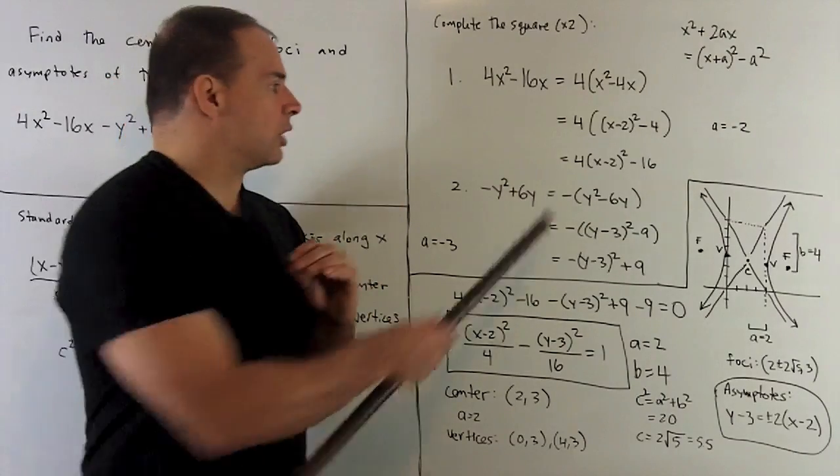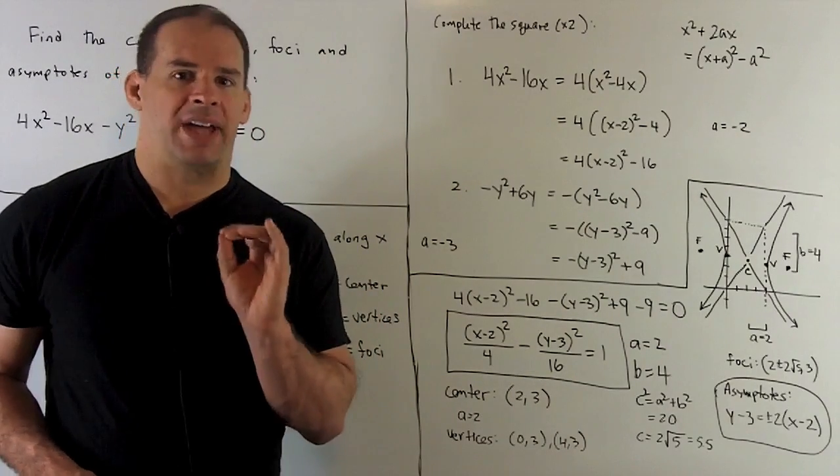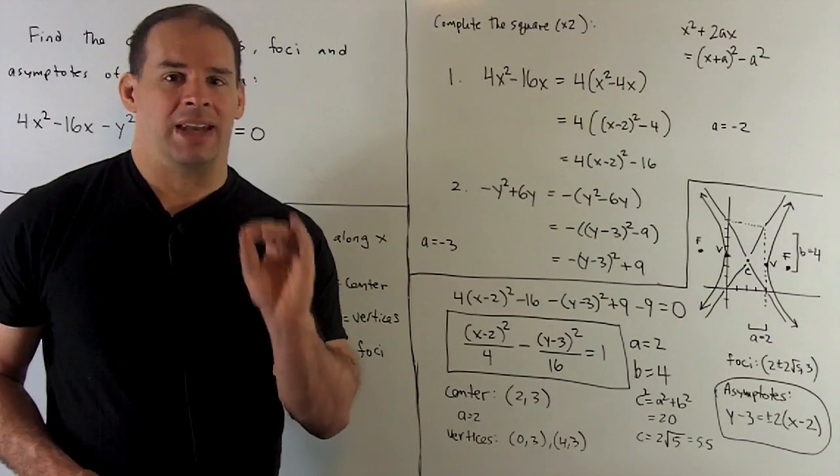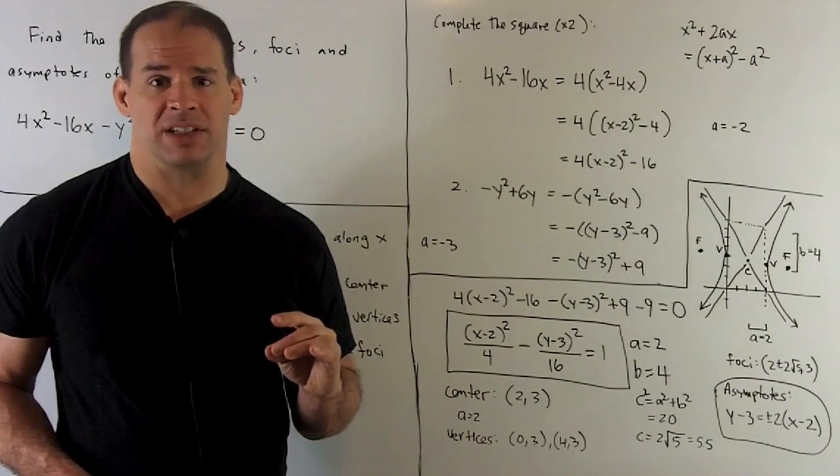Now I can take our two expressions, put them into our formula, and then collapse. So here, it's just algebra. The 9s go away. I move the 16 to the other side, and then divide both sides by 16.